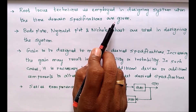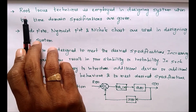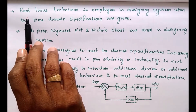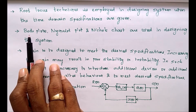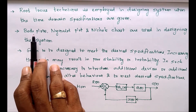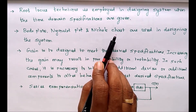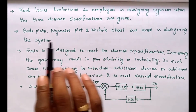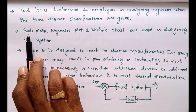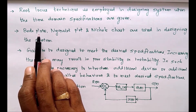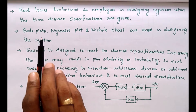For a system where time domain specifications are given, we can use the root locus concept. If the given specifications are in terms of frequency domain, we can use Bode plots, Nyquist plots, or Nicholas chart for analyzing or designing the system. Among these methods, the Bode plot is the simplest and best method for analysis purposes.